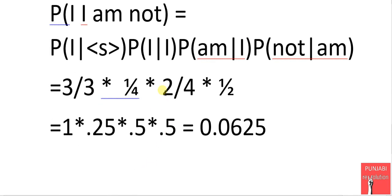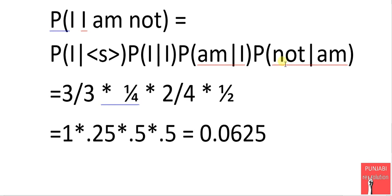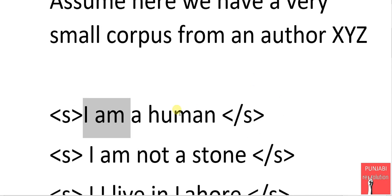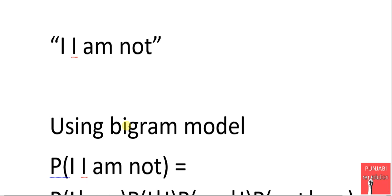And probability of not given am means the count of 'am not' divided by total count of M. 'M not' occurred one time and total count of M is 2. So it is 1 over 2.